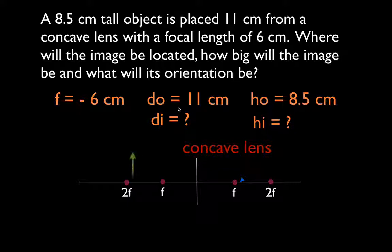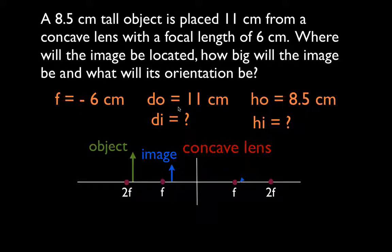I think to myself: if I put the object out here, where should the image be? You should know this based on what you've learned about lenses and mirrors and the ray diagrams you've done. You know that if it's a concave lens and the object is anywhere, the image will always be between the lens and F. So the image distance has to be less than 6. The image will always be smaller than the object, so the image height has to be less than 8.5. The magnification and image height has to be positive, and it will be a virtual image.